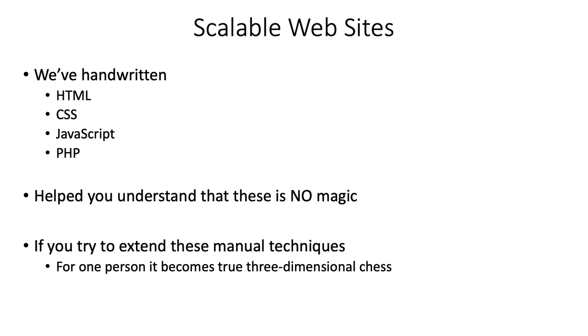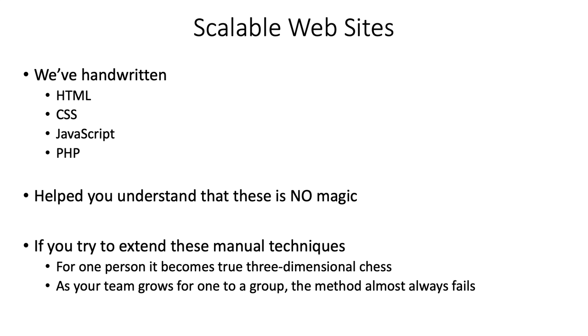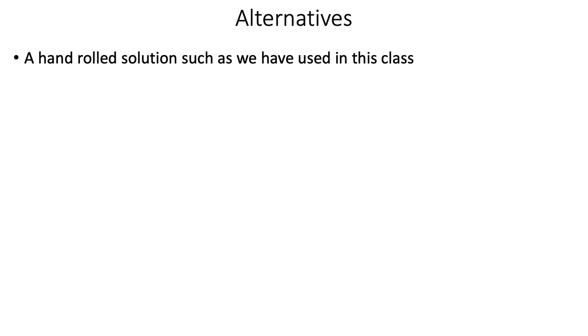So that in the future if you want to change something about how it's handled, you could appreciate the different layers of technology that are interacting and better understand where to go to do that. If you try to extend these manual techniques, though, for one person it becomes a true three-dimensional chess set — trying to remember whether that's in HTML, or where that cascading style sheet is, or what JavaScript is doing that. As a site grows, one person who's really good at visualizing may be able to keep up with it, but as your team grows from one to a group the method almost always fails. So what are the alternatives? Well, let's look at the hand-rolled solution — we already know how to do it, so that's a plus.